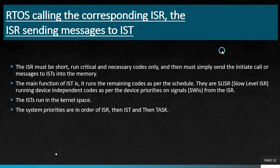The main function of the slow level ISR — the inter-service thread — is to run the remaining code as scheduled, considering priorities. It runs device-independent code as per device priorities on signals from the ISR. The slow level ISR runs in the kernel space. System priorities are in order: ISR first, then IST (inter-service thread), then the task.